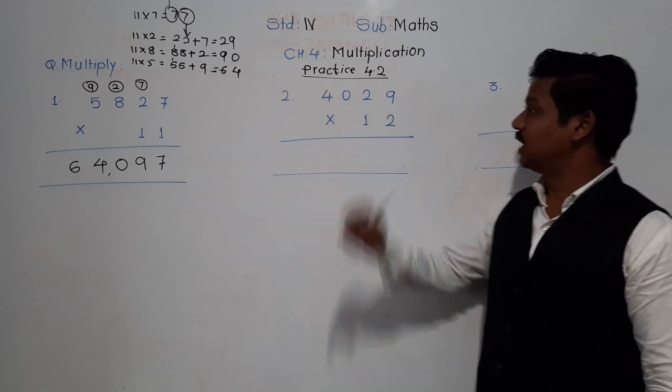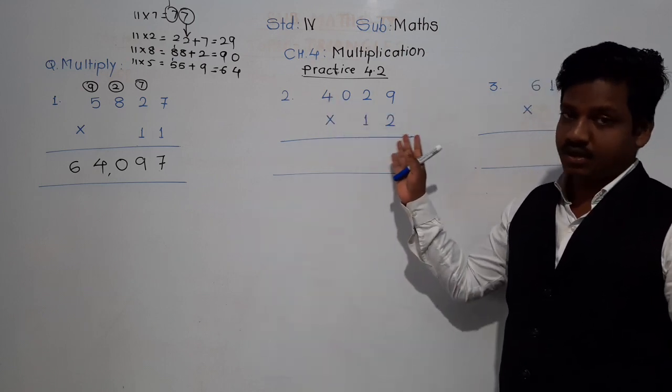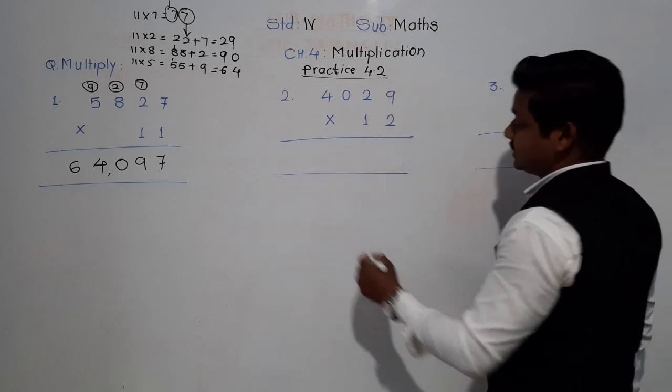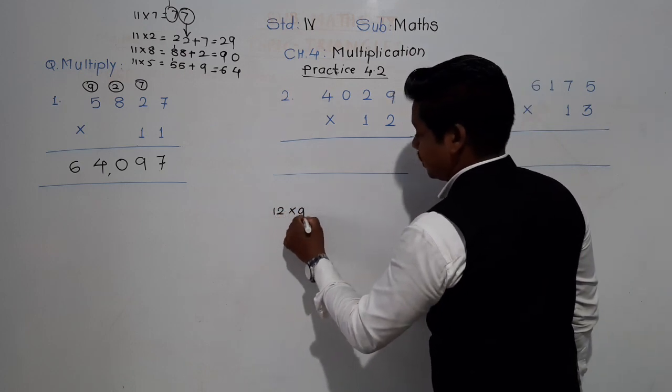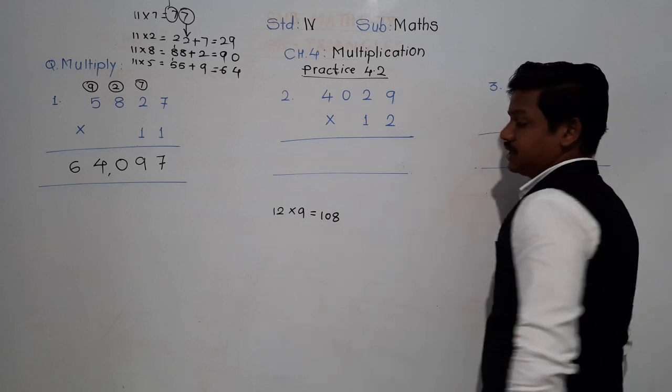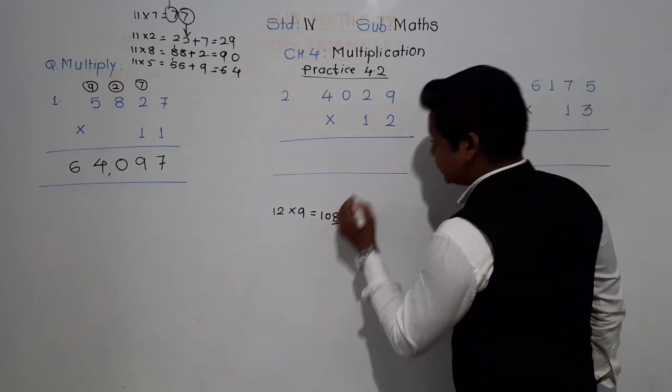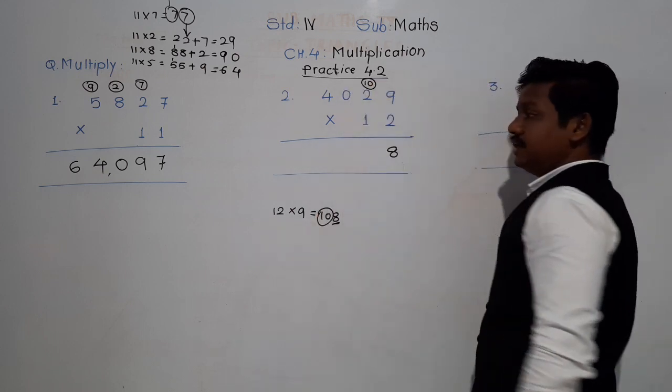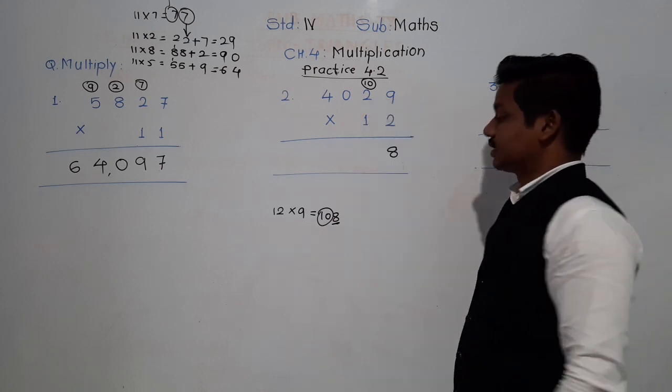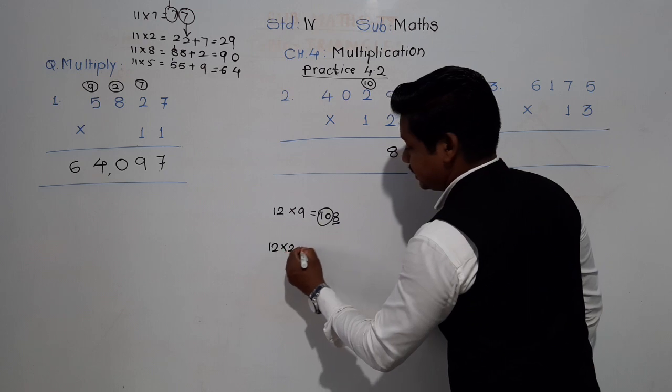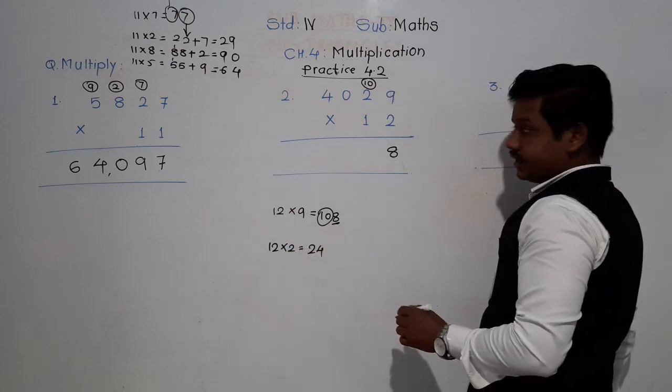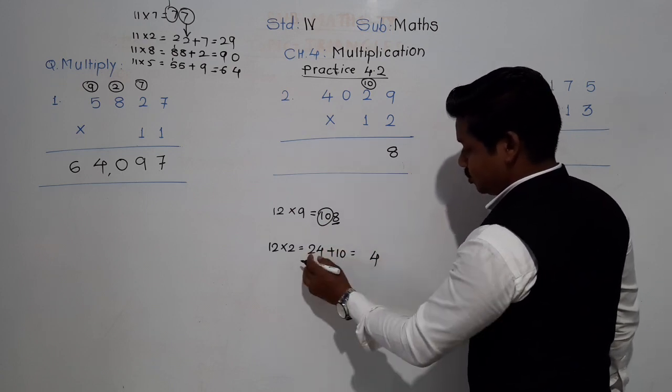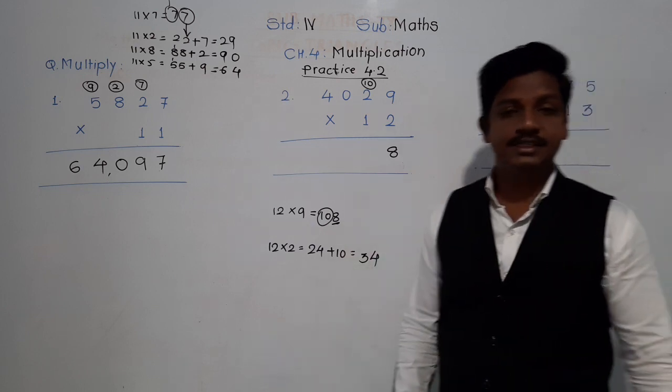Next example: 4029 into 12. You must know your table of 12. 12 nines are 108. Last digit will come down and this will be carried. Then 12 twos are 24, plus this 10 carried: 4 plus 0 is 4, 2 plus 1 is 3, so 34. This 4 will come down and this 3 will be carried.